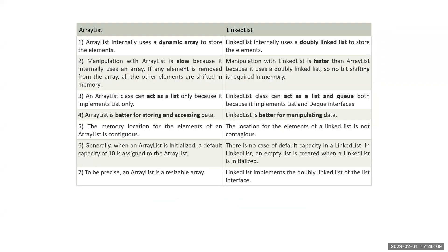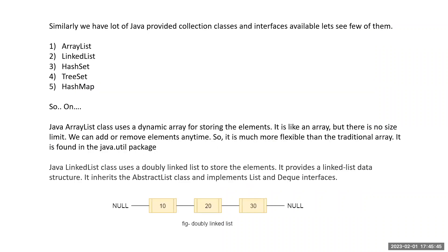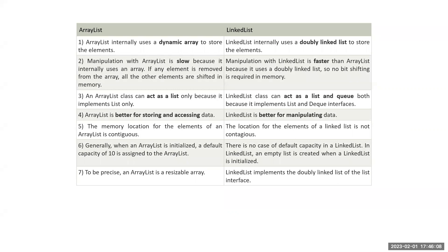I've given a couple of differences between ArrayList and LinkedList — you can find these things in Google as well. But go through what exactly these things do. If you have any questions about the collections and the comparison between them, let me know and I can cover them. For HashSet, TreeSet, HashMap, and other collections — try to visit and read what each one does, and if you have questions please ask.